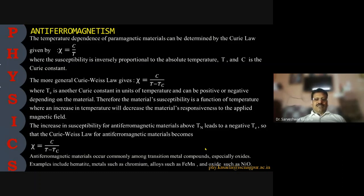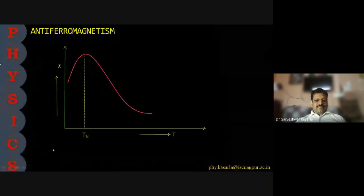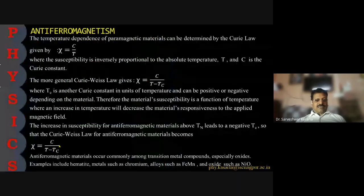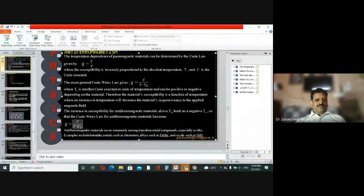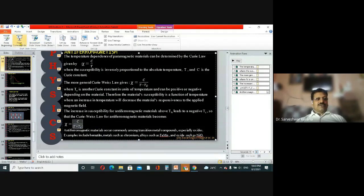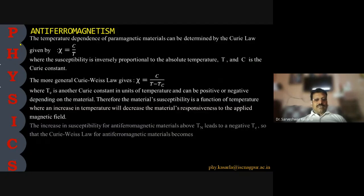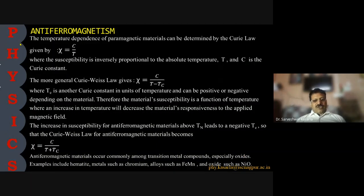Correcting the expression: for anti-ferromagnetic materials, the Curie-Weiss law becomes ψ = C/(T + θ), with a positive sign. Anti-ferromagnetic materials occur commonly among transition metal compounds, especially oxides. Examples include hematite, metals such as chromium, alloys such as iron-manganese, and oxides such as nickel oxide. On the susceptibility versus temperature graph, the susceptibility is maximum at the Néel temperature.